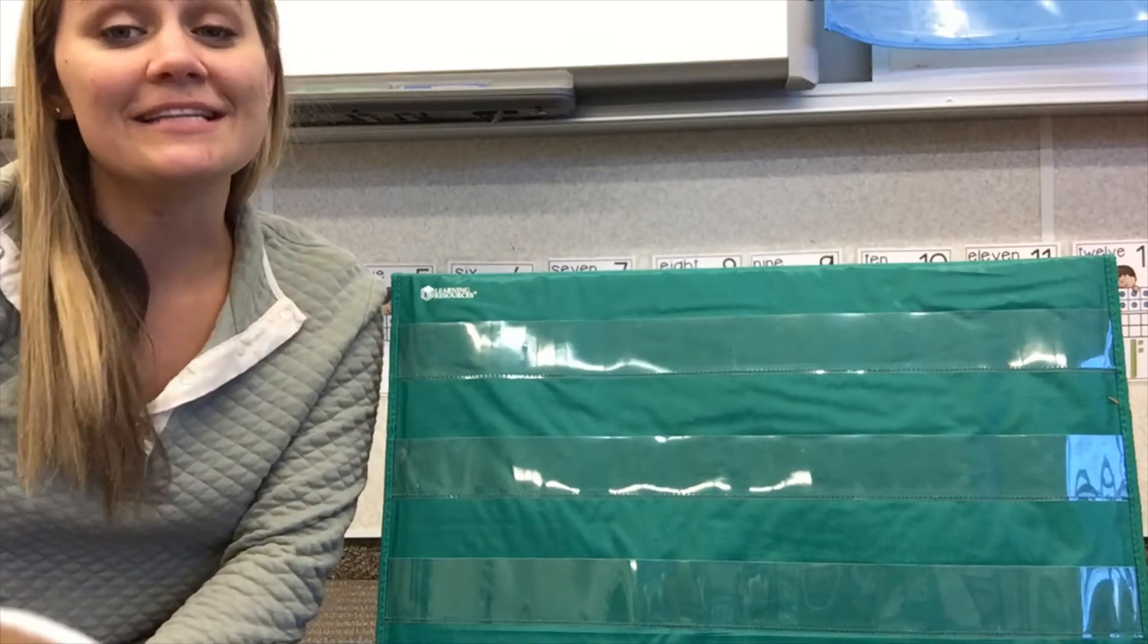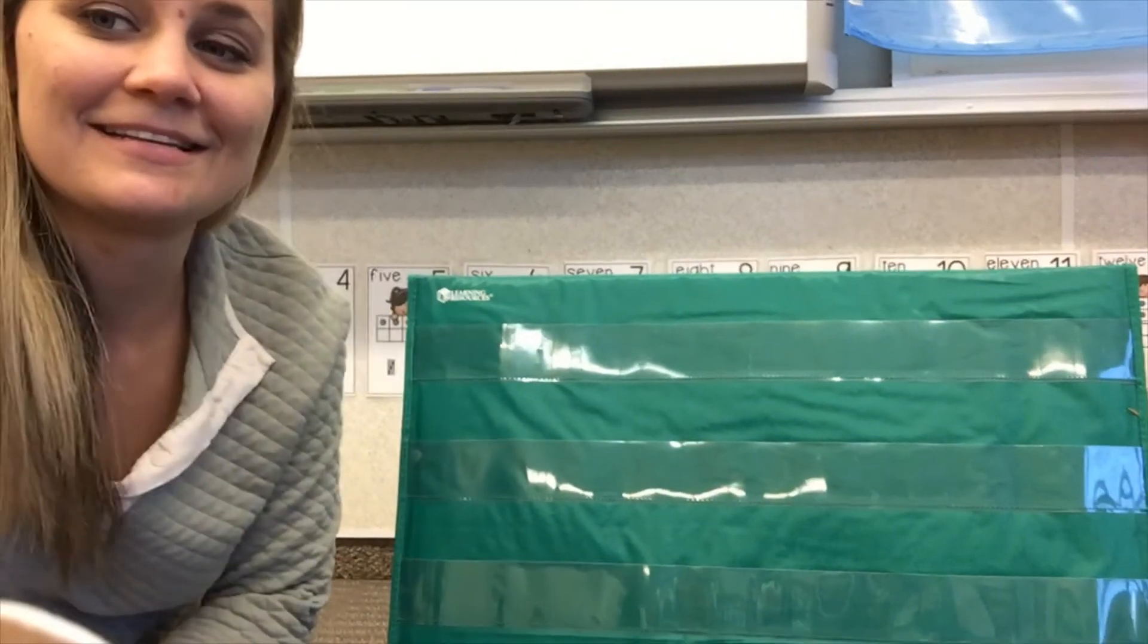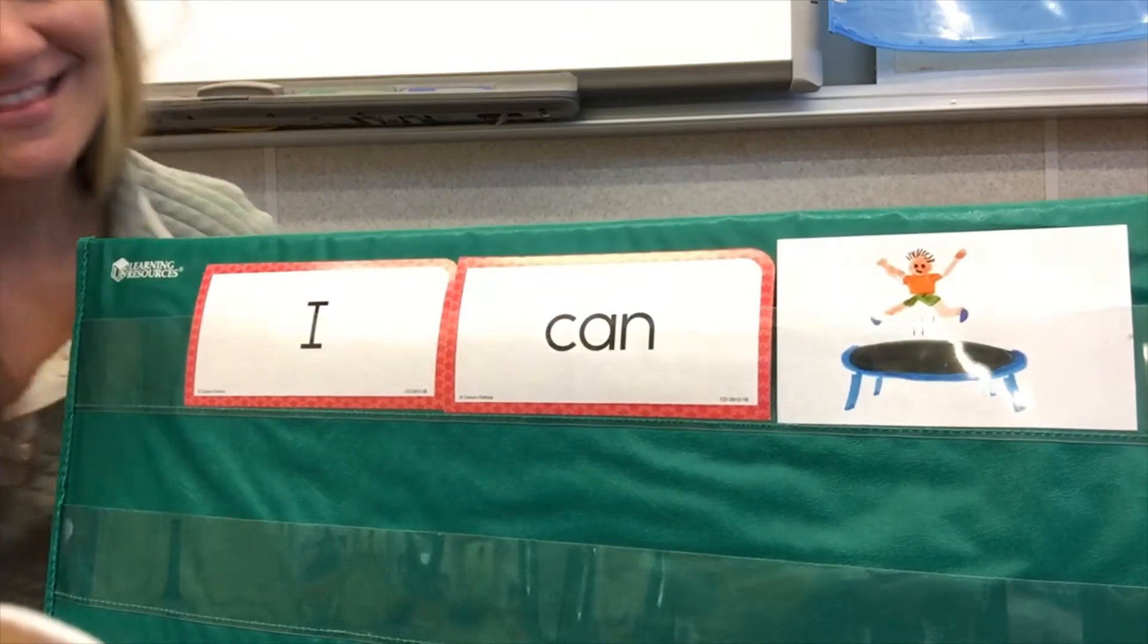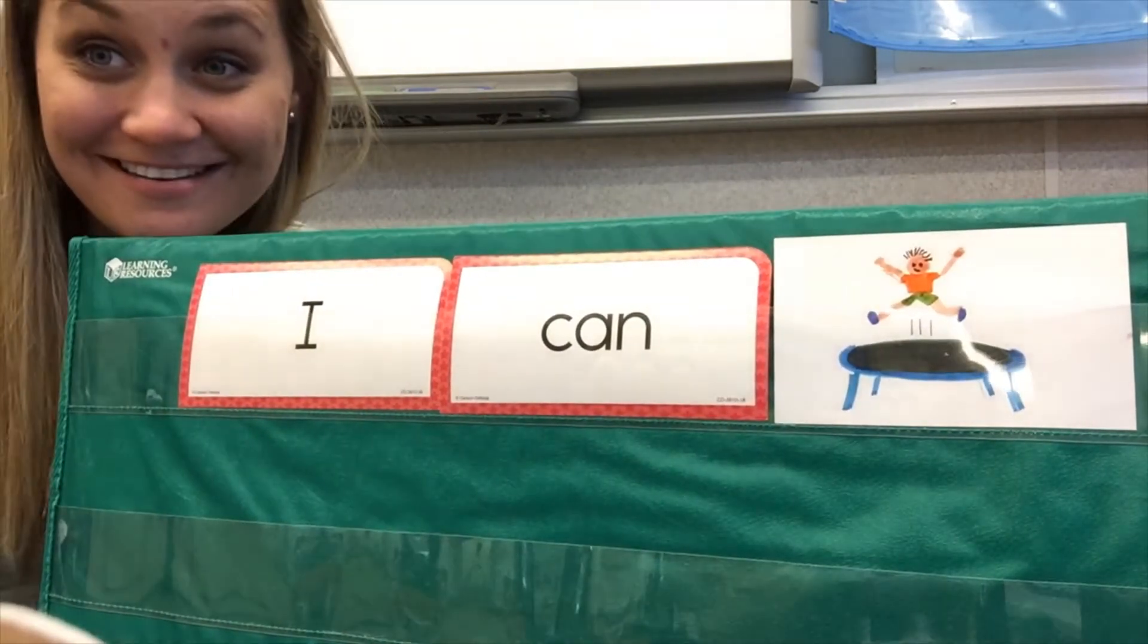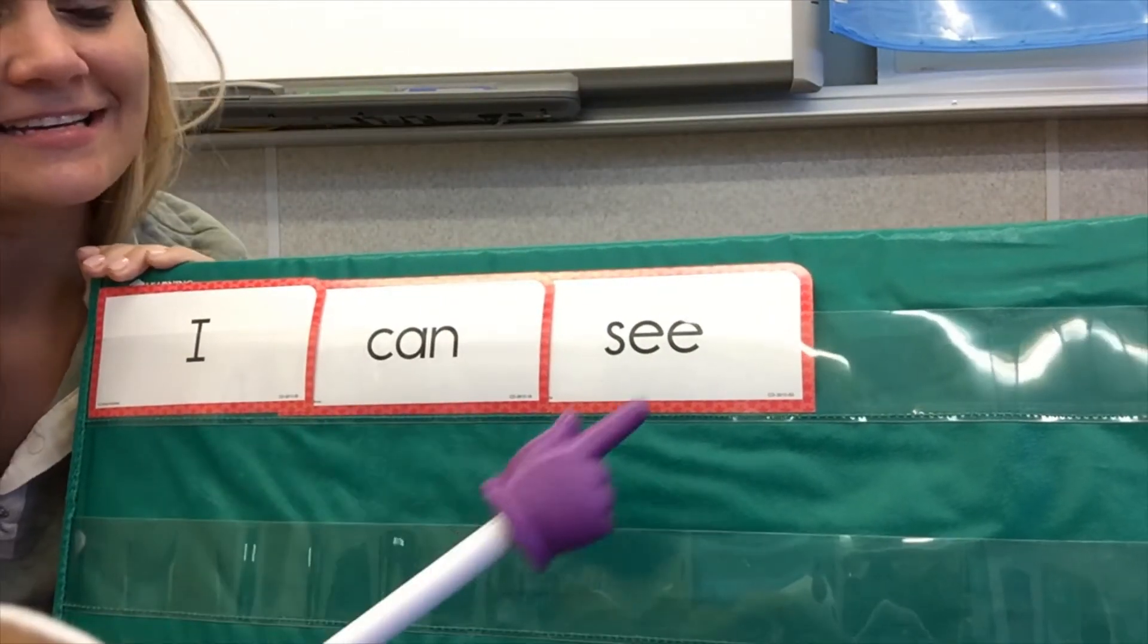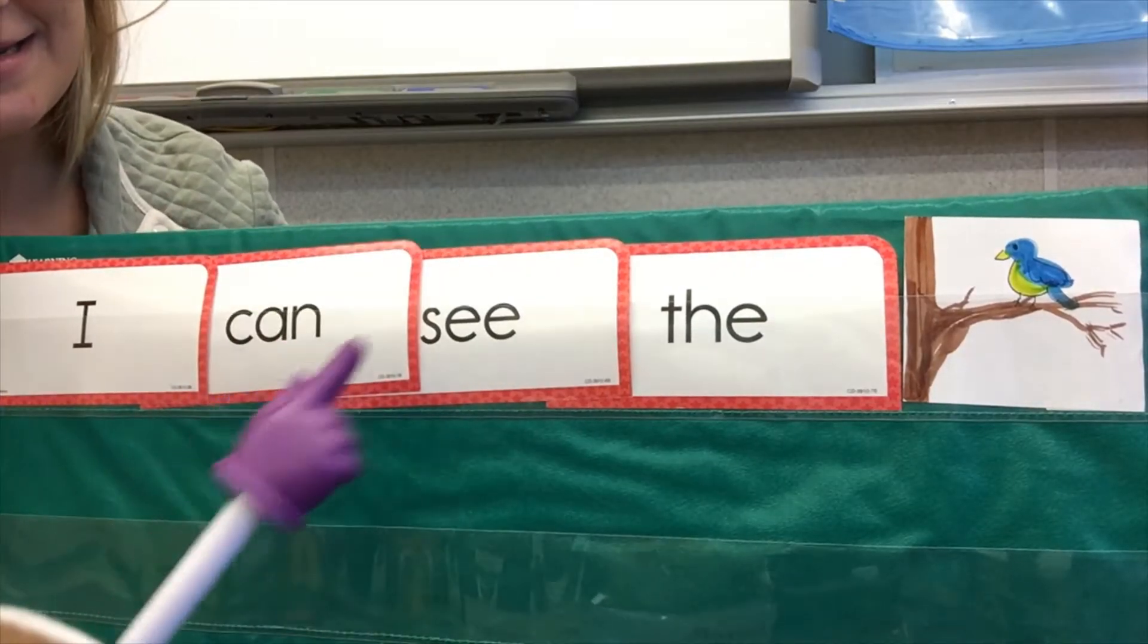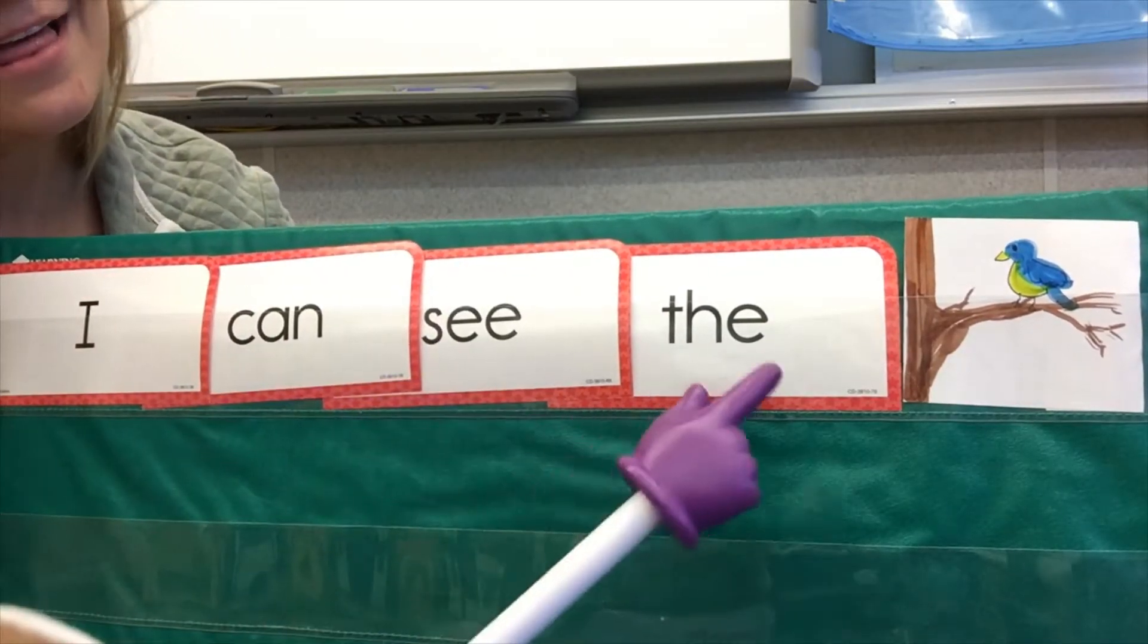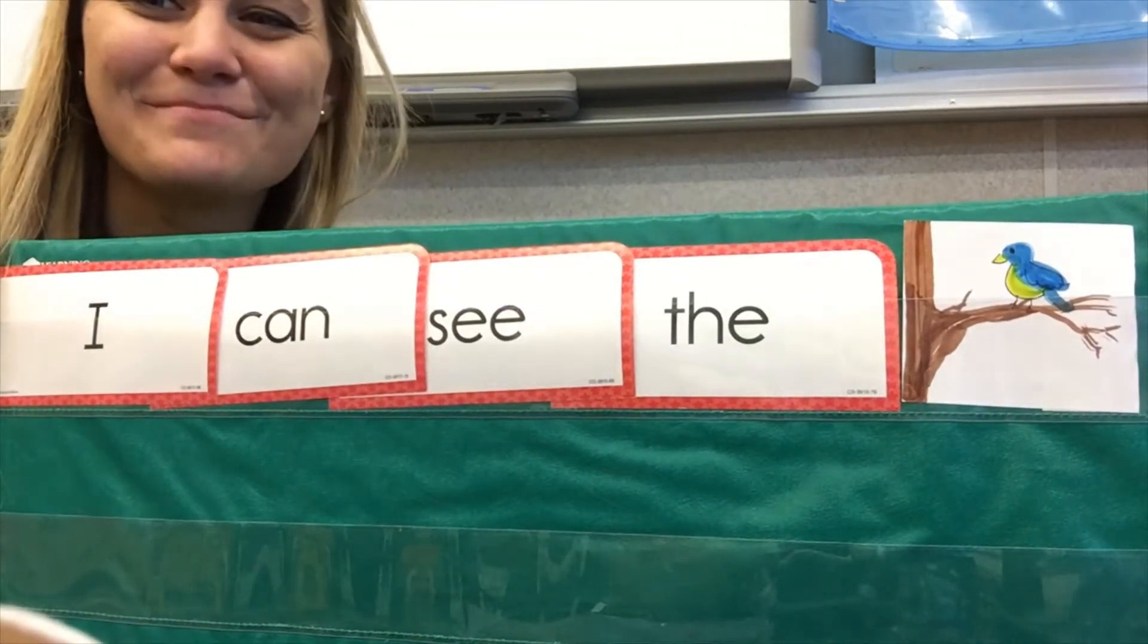I'll help you read some sentences that use all of our sight words, like, read it with me. I can jump. I can see. I can see the... that's right, bird.